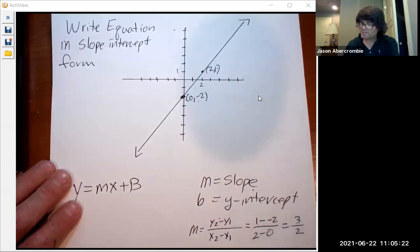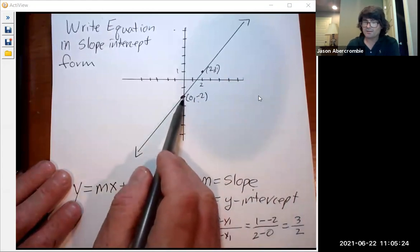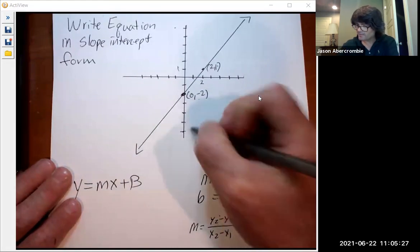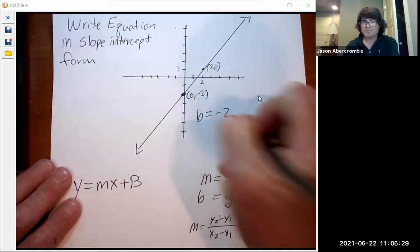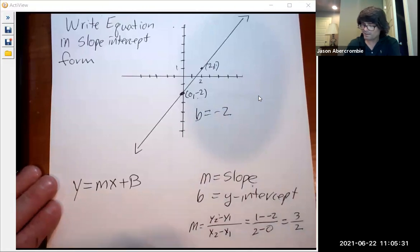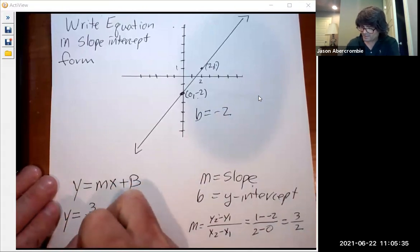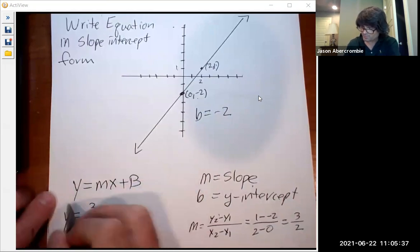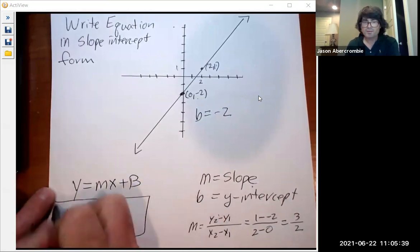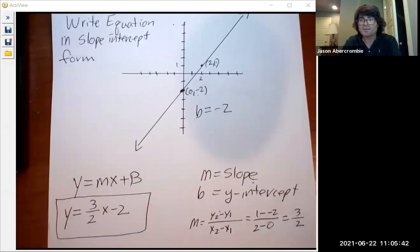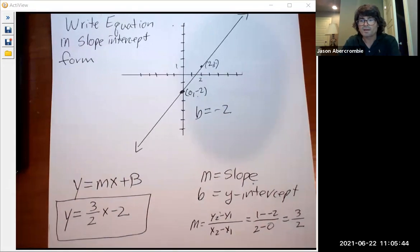And my y-intercept, you can actually just see flat out it is - b is negative 2. So from that I can put my equation together: y equals three-halves x minus 2. That is the slope-intercept equation that is coming from the graph.